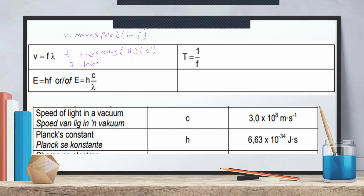T is the period — time for one wave, unit is seconds. C is a constant number, the speed of light, and h is Planck's constant. For energy, you can write hf or hc over lambda, because f equals c over lambda. This comes from v equals f times lambda, substituting c for v. You can also rearrange to get lambda equals c over f.